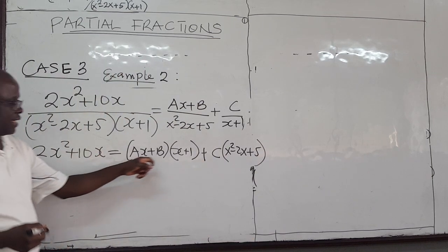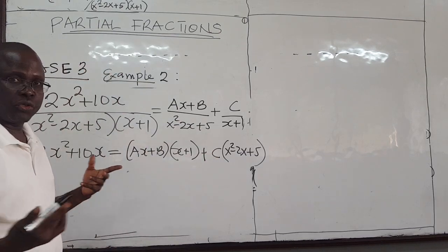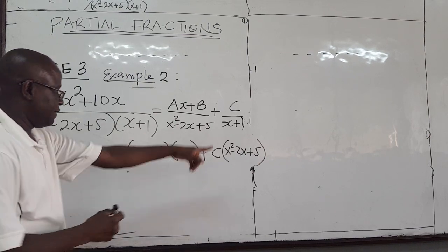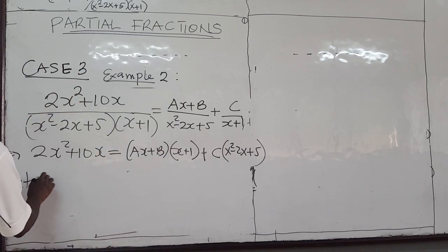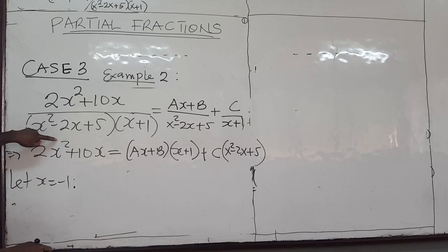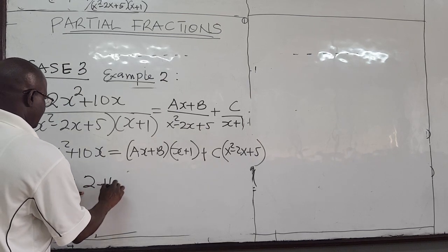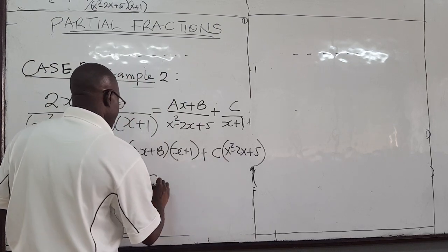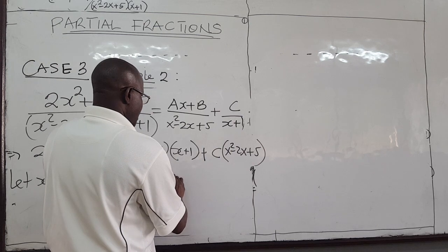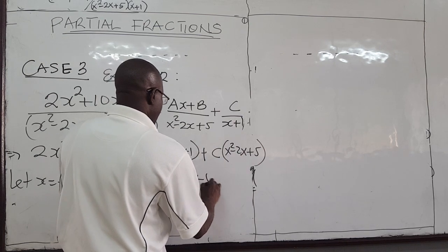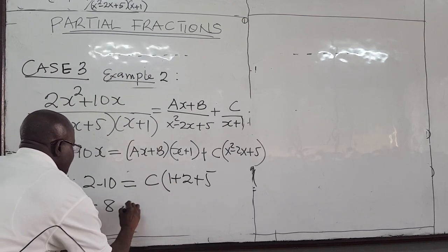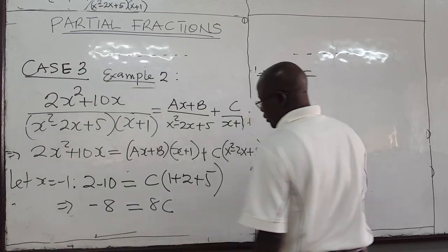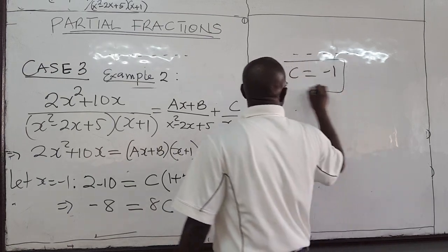So to solve for a, b, and c, I will choose values for x. I'll choose x to be negative 1 so that the linear factor cancels, making it easy to solve for c. With x equal to negative 1: negative 1 squared is 1, so the left side gives 2 minus 10, which is negative 8. The ax plus b term goes to 0. For c: negative 1 squared minus 2 times negative 1 plus 5 gives 1 plus 2 plus 5 equals 8. So negative 8 equals 8c, therefore c equals negative 1.